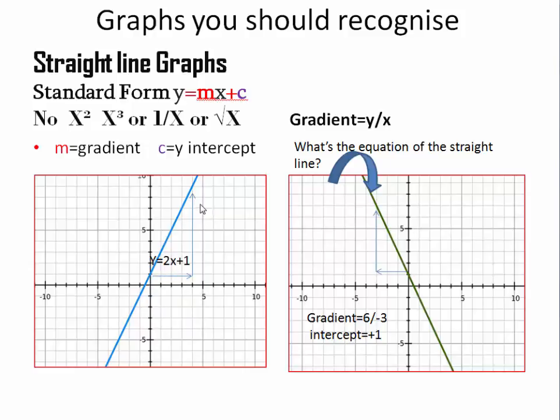By gradient we mean the y units divided by the x units or the rise over the run. Here the x units if we count them are 1, 2, 3, 4, 5, 6, 7, 8. And the y units are 4, 8 divided by 4, 2. y equals 2x plus 1.